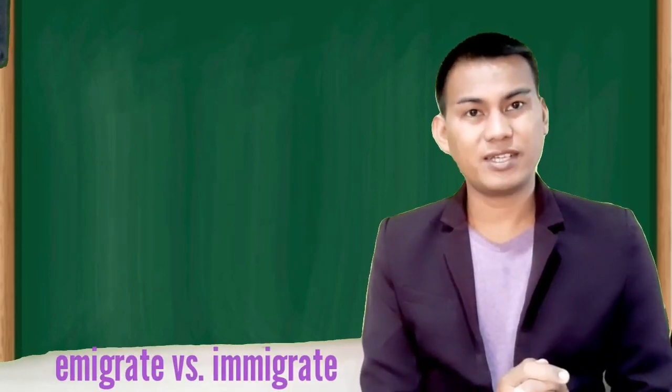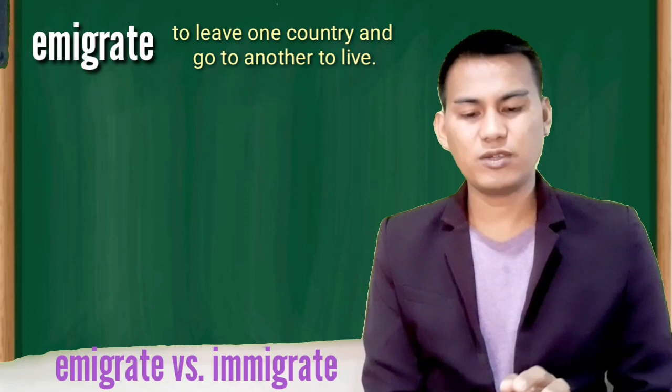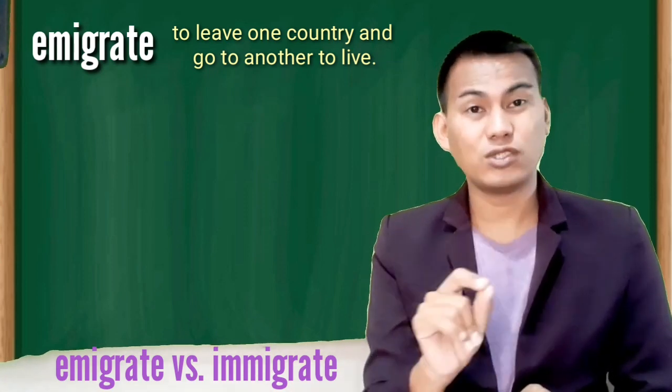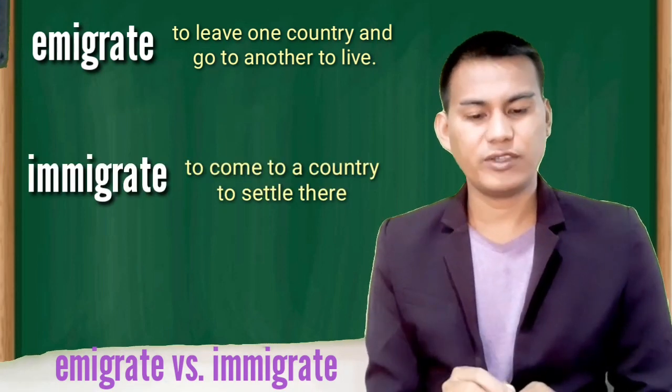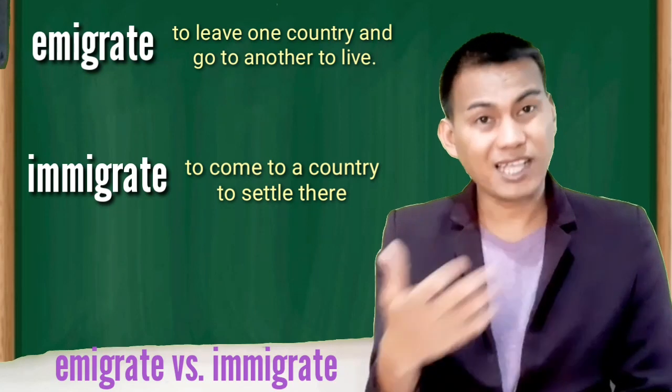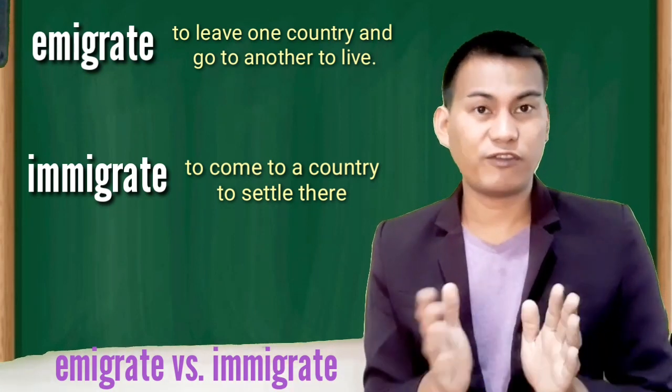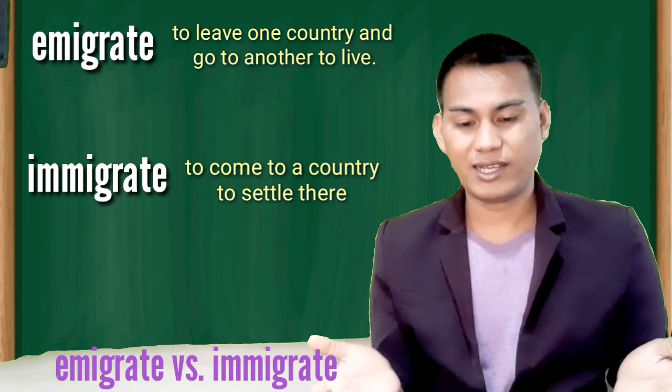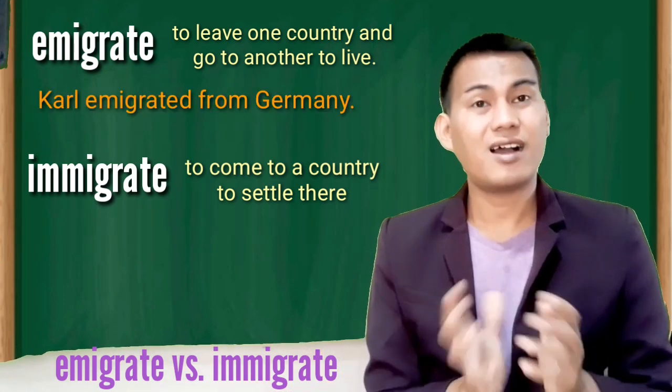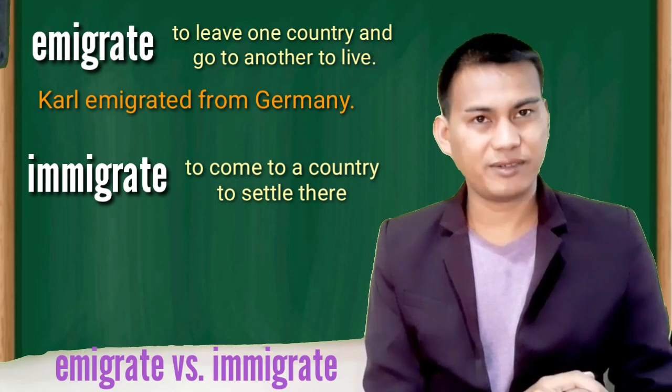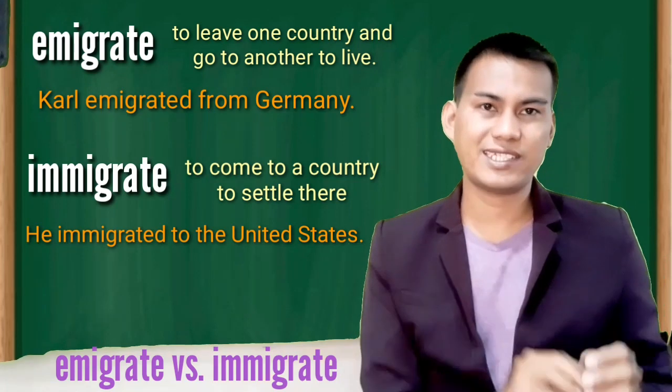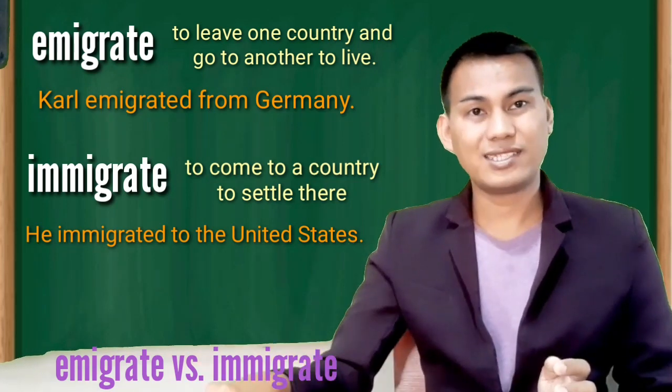Emigrate versus immigrate. Use emigrate to mean to leave one country and to go to another to live. Use immigrate to mean to come to a country to settle there. Use the preposition from with emigrate. Use to or into with immigrate. Carl emigrated from Germany. He immigrated to the United States. So, from Germany to United States. Emigrate. Immigrate.